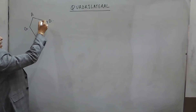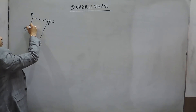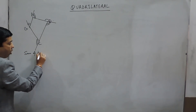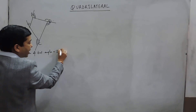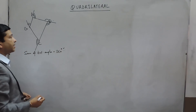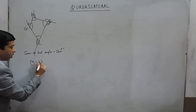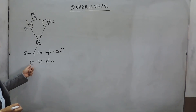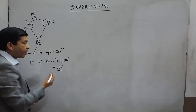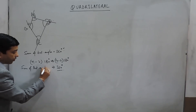The property of external angles: this angle plus this angle plus this angle plus this angle — the sum of all external angles is always 360 degrees. Whether we talk about a triangle, quadrilateral, or any polygon, the sum of exterior angles remains 360 degrees, and the sum of interior angles is always (n-2) × 180 degrees. Here the number of sides is 4, so it is (4-2) × 180 = 360 degrees. So the sum of exterior angles is 360 and the sum of interior angles is also 360 in the case of a quadrilateral.